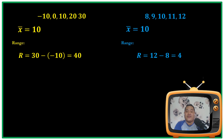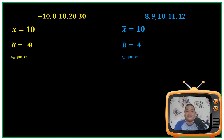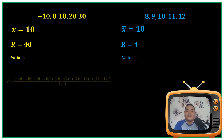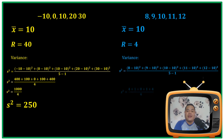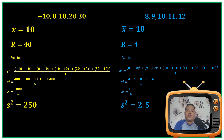The range of the first data set is 40. The range of the second data set is 4. Based on the results, the first data set is 10 times wider than the second one. For the variance: the variance of the first data set is 250, and the variance of the second data set is 2.5.